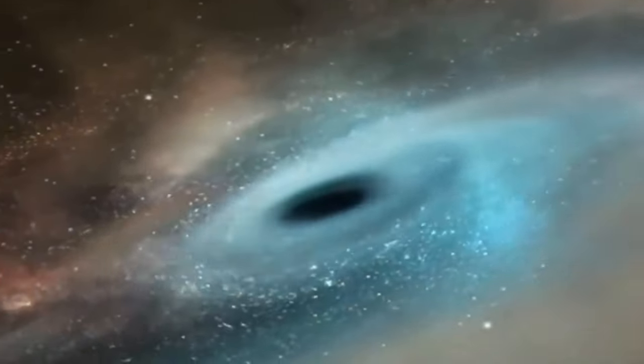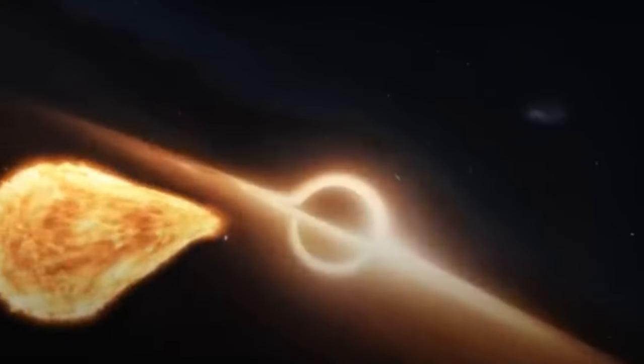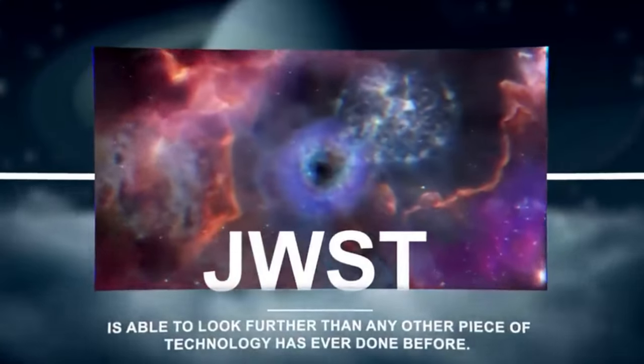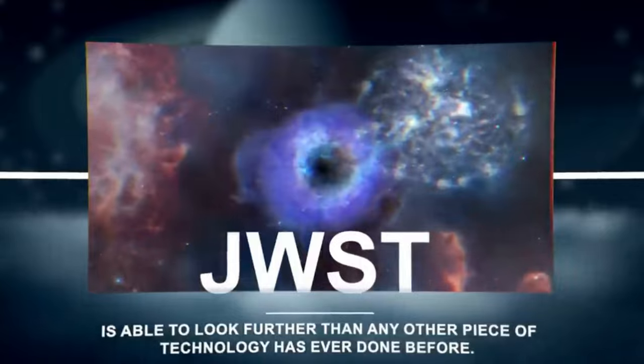Gravitational lensing, a phenomenon predicted by Einstein's theory, occurs when massive objects like black holes bend the fabric of space-time, distorting the path of light from distant objects.